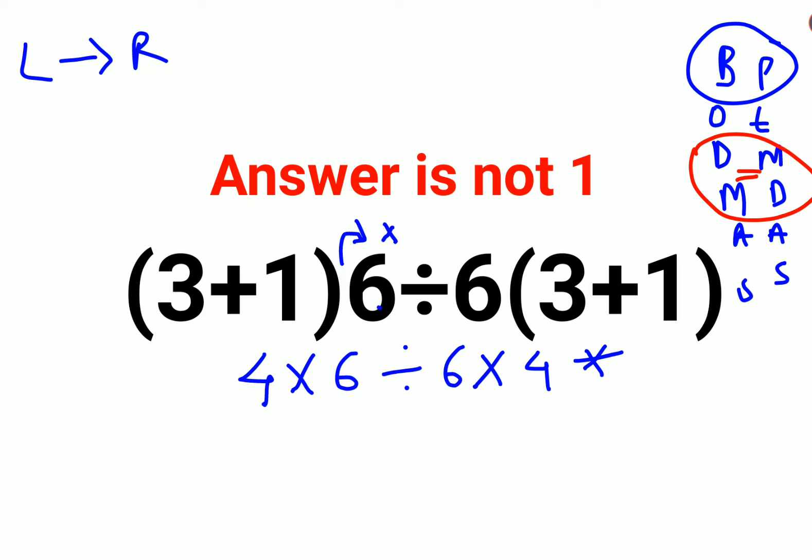So first we will do what? 4 into 6 that gets you 24. And then we will divide by 6. That gets you what? 24 divided by 6 gets you what? 4. And then we will continue with the rest of the operation which was what? Into 4. So answer for this one is 16.